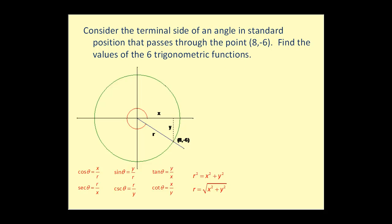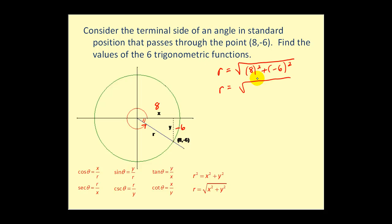We plot the angle in standard position and form the reference triangle by dropping a perpendicular to the x-axis. The x-coordinate is 8, so that distance is 8, and the y-coordinate is negative 6 — we use the signed value negative 6. The hypotenuse r is missing, so we calculate: r equals the square root of 64 plus 36, which is the square root of 100, so r equals 10. Remember, r is always positive.